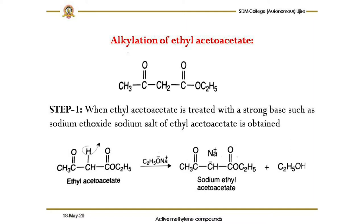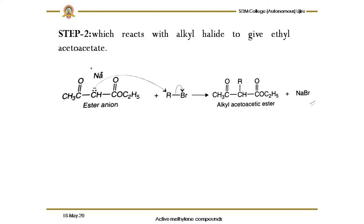Since the alpha proton is acidic, sodium ethoxide replaces it with sodium, giving the salt of ethyl acetoacetate. In the second step, this salt reacts with an alkyl halide. The negative charge on the CH group takes up the alkyl group, the C–Br bond breaks, and a bond forms with sodium. The product is alkyl acetoacetic ester, with sodium bromide as byproduct. Instead of R you can use any alkyl group such as CH₃ or C₂H₅.